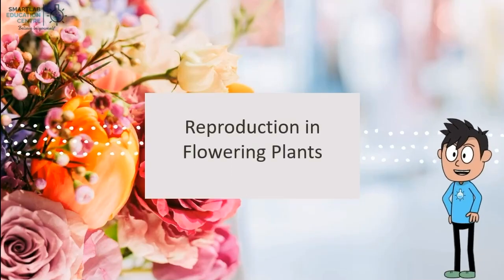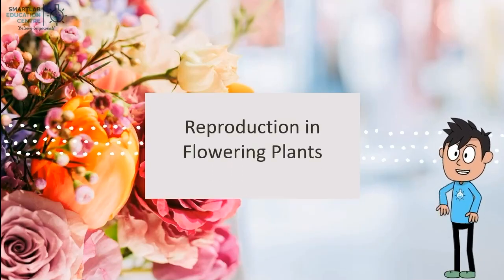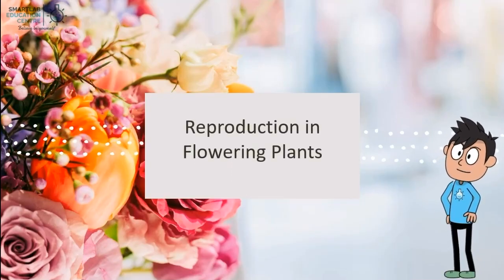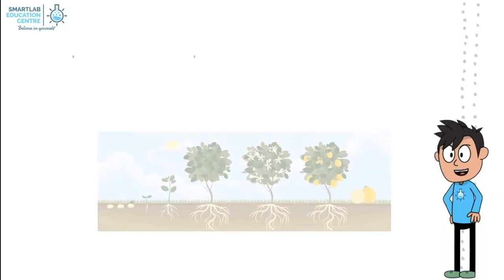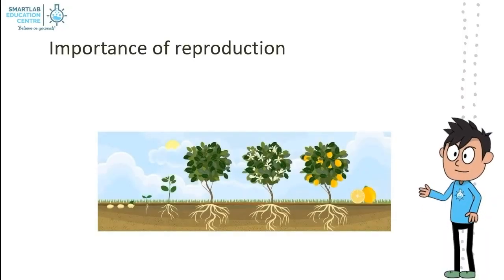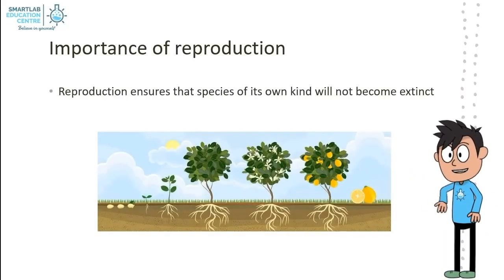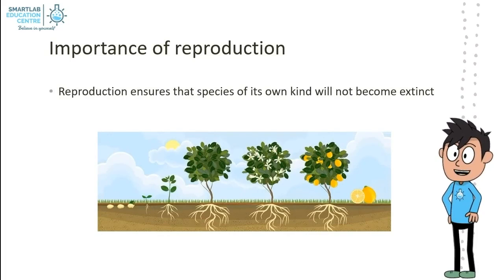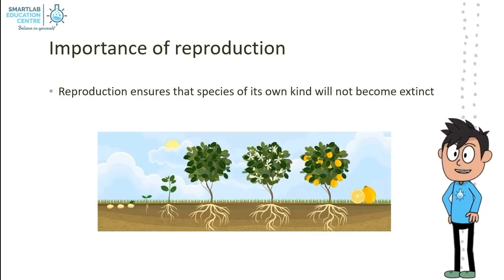We will now explore how reproduction occurs in flowering plants in detail. Reproduction is important as it ensures that species of its own kind will not become extinct.